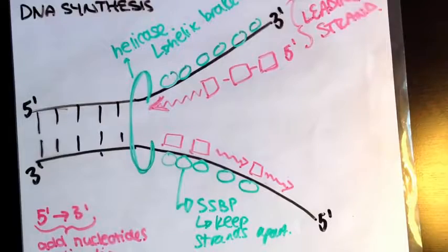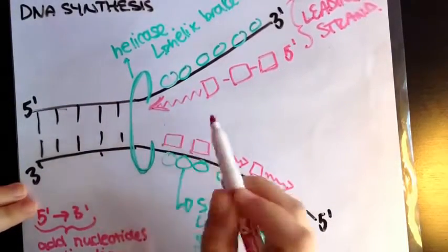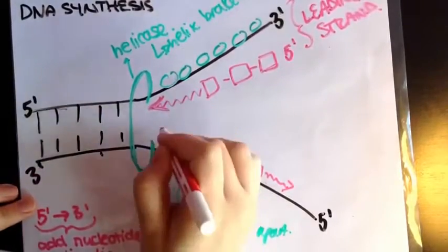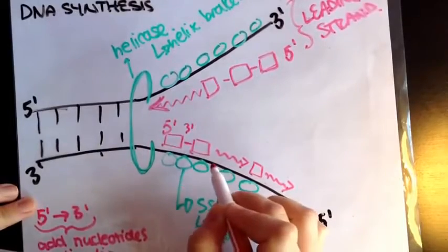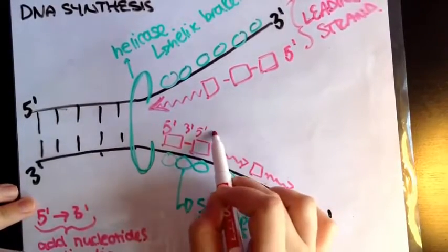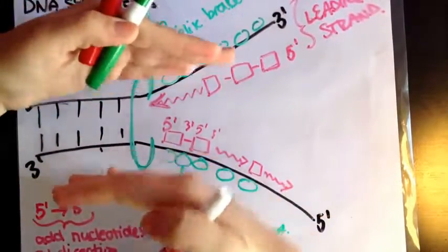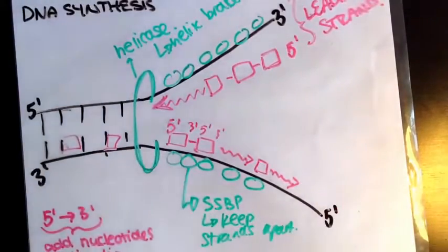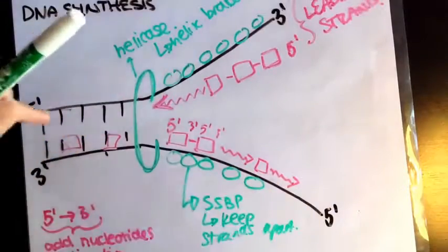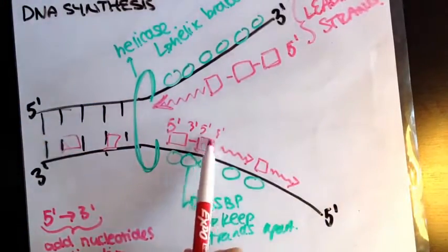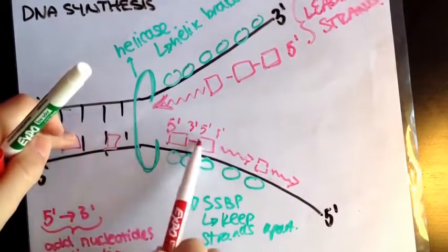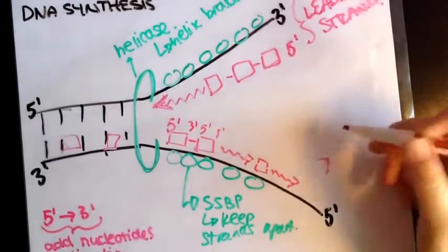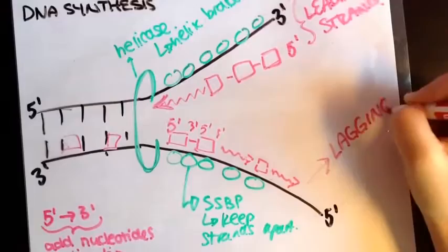That tells you it's anti-parallel. So as the DNA opens, it's being added from 5' to 3', then there's a gap, then again 5' to 3', then another gap. Because as the helix opens more, I have to come back and add more sequences. So it's being added discontinuously — it's a discontinuous synthesis. This tells us that this is the lagging strand.